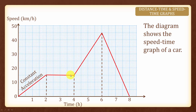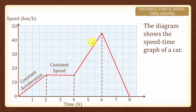Now what about the next 2 hours here? The car is still travelling at a speed of 15 km per hour but the speed is a constant speed. And next, for the next 2 hours the slope is higher and therefore there is a higher constant acceleration here.